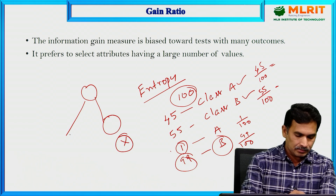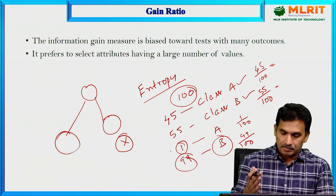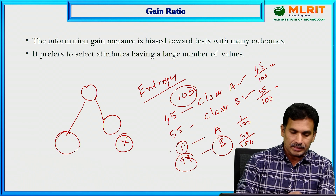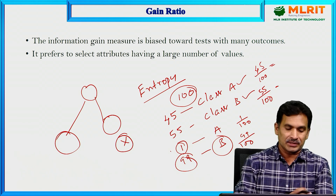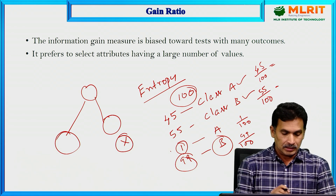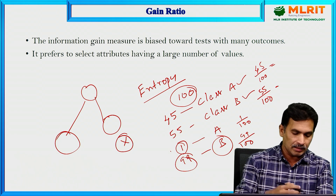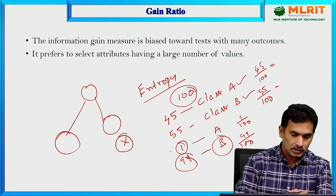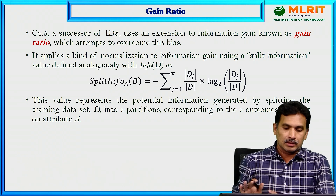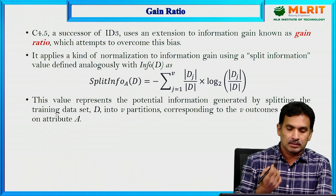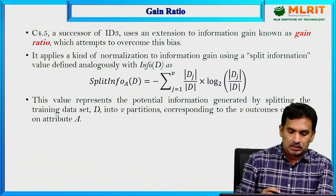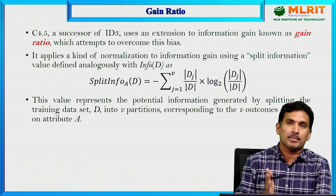The purpose of using attribute selection measures is to determine how pure the partitioning of tuples or samples in the dataset is. The measure — whether information gain, gain ratio, or Gini index — that gives the lowest level of uncertainty will be used to select the splitting attribute. Coming back to gain ratio, which is essentially a normalization of information gain, let us see how it is used to select the best splitting attribute.